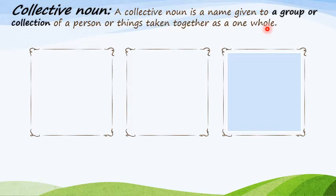A name which is given to a particular group of a person or a thing — we call it a collective noun. For example, if you see a lot of cows together in one group, what would you call it? Cattle. Yes, we call it cattle. Very good, children. Let's take a few more examples.